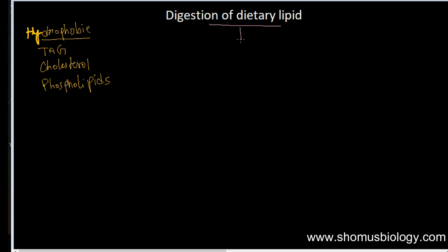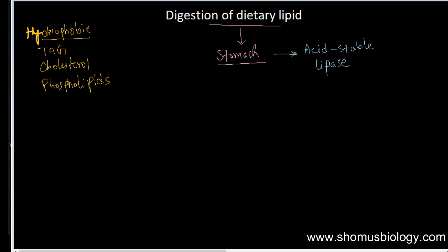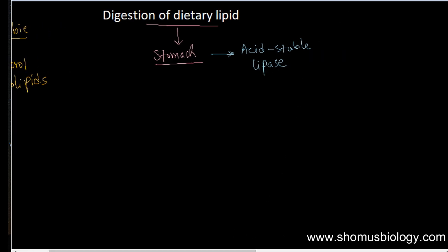The digestion of dietary lipid begins in the stomach. What happens in the stomach is that it has an acid-stable enzyme called lipase. This lipase acting in the stomach is acid-stable, and it is mostly either lingual or gastric lipase — meaning it is secreted by glands in the mouth or in the stomach.